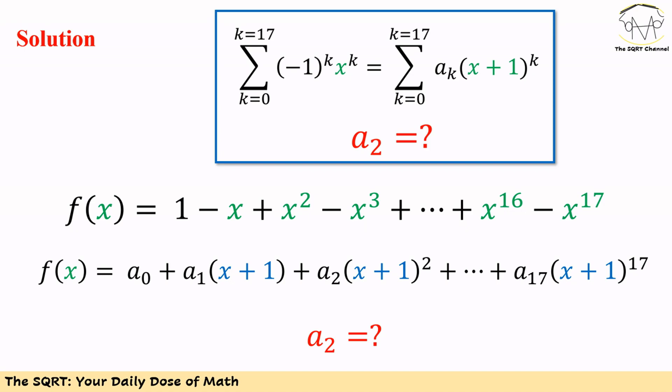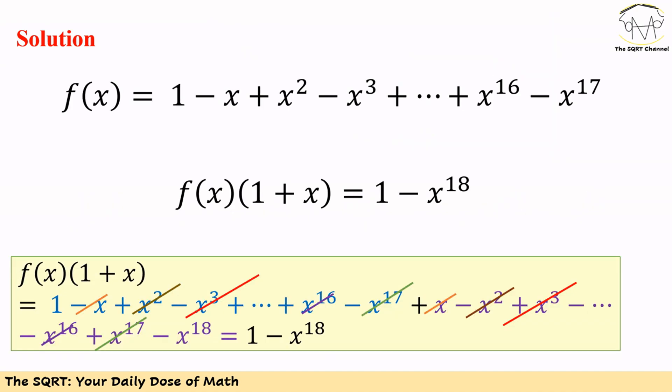For the second sigma we can write it as a_0 plus a_1 times x plus 1, plus a_2 times x plus 1 to the power of 2, and we need to continue this up to a_17 times x plus 1 to the power of 17. And again we want to find a_2 in this equation. Remember, a_0, a_1, a_2, up to a_17 are going to be constants.